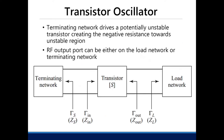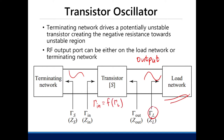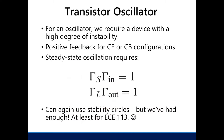A transistor oscillator works as follows. Let's say you want to supply a load with a certain oscillation — this is your RF output. Recall that gamma_in is a function of gamma_L, and gamma_out is a function of gamma_S. A transistor oscillator will oscillate if gamma_S, gamma_L, gamma_in, and gamma_out satisfy specific conditions.